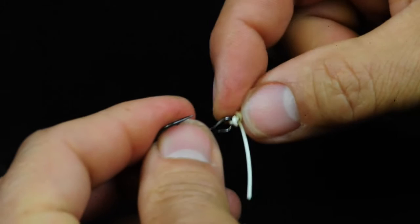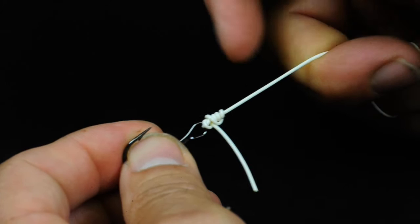The clinch knot is very strong, very simple. And also because of the loop it's easy to do in the dark.